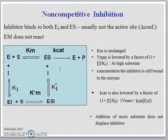The Vmax is lower by a factor of 1 plus I over Ki. At higher substrate concentration, the inhibitor is still bound to the enzyme. Kcat is also lowered by a factor of 1 plus I over Ki, and the Kcat value can be determined from the equation of Vmax, which equals Kcat times E-naught — where E-naught is the concentration of enzyme introduced in the reaction.